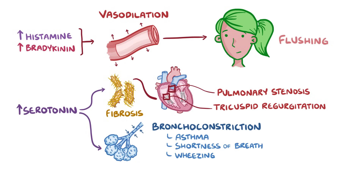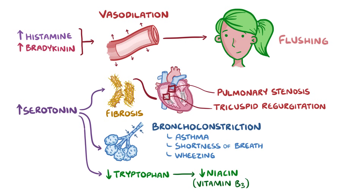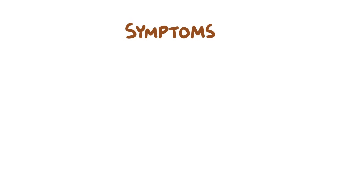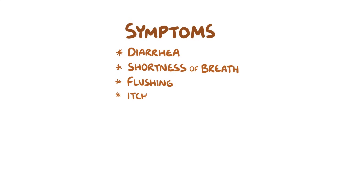The increased synthesis of serotonin also reduces the amount of tryptophan available to the body, which is used to make niacin, or vitamin B3. And reduced levels of niacin can cause pellagra, which is a disease that causes symptoms like inflamed skin and mental confusion. So there's a whole load of excess hormones circulating in the blood, and the most common symptoms of carcinoid syndrome include diarrhoea, shortness of breath, flushing, and itching.